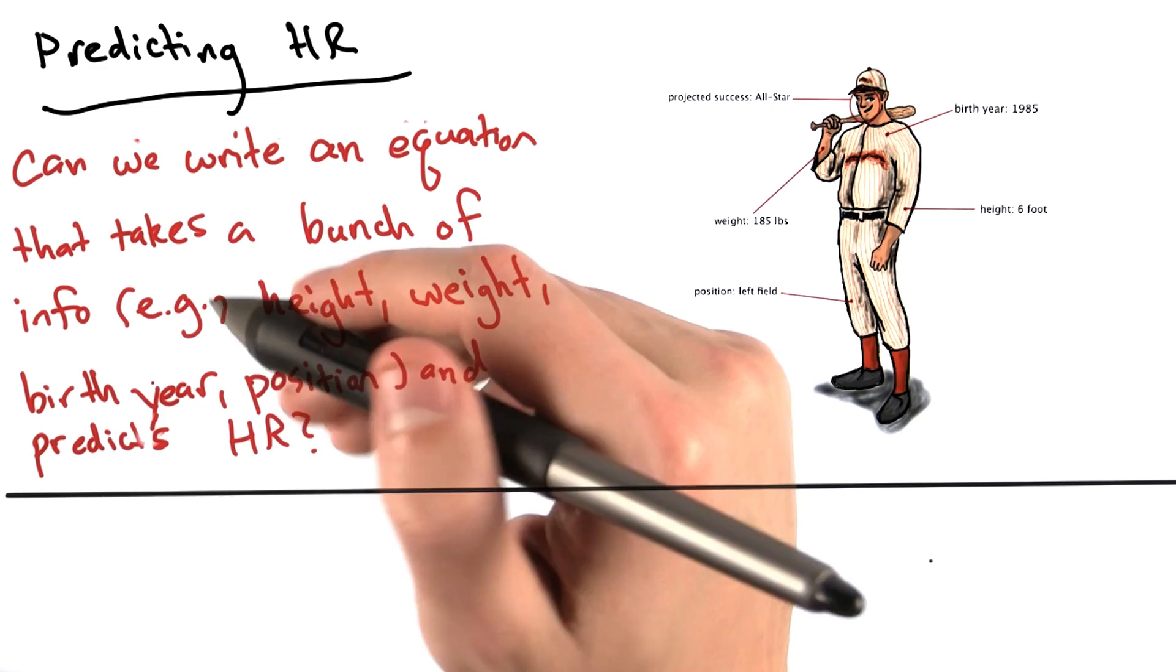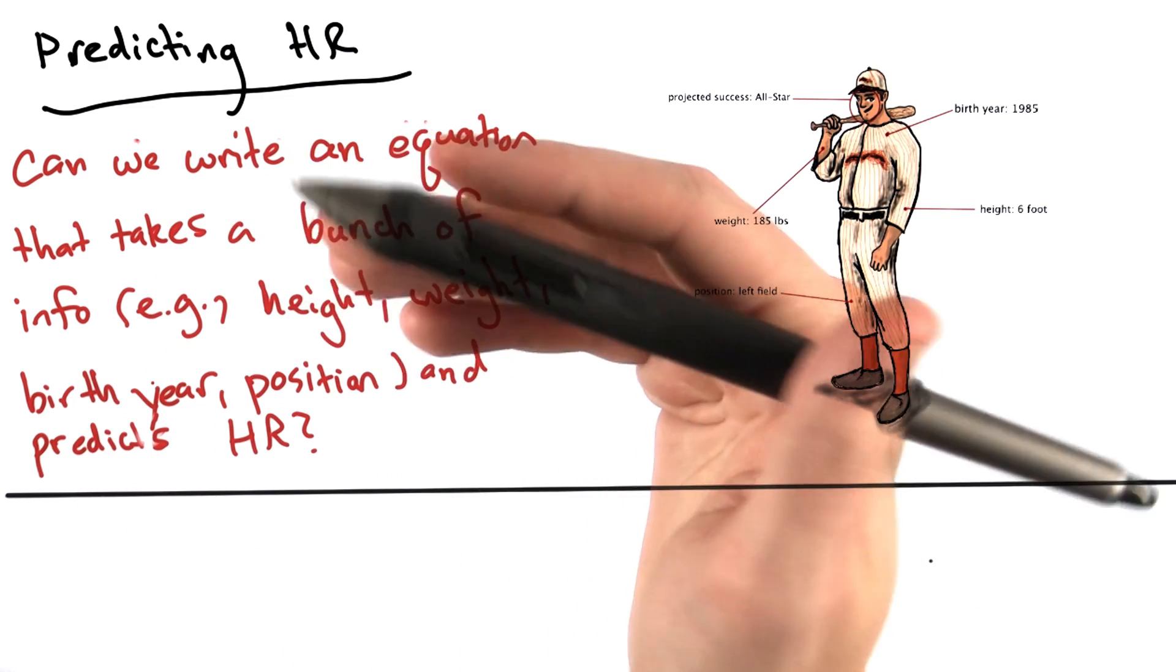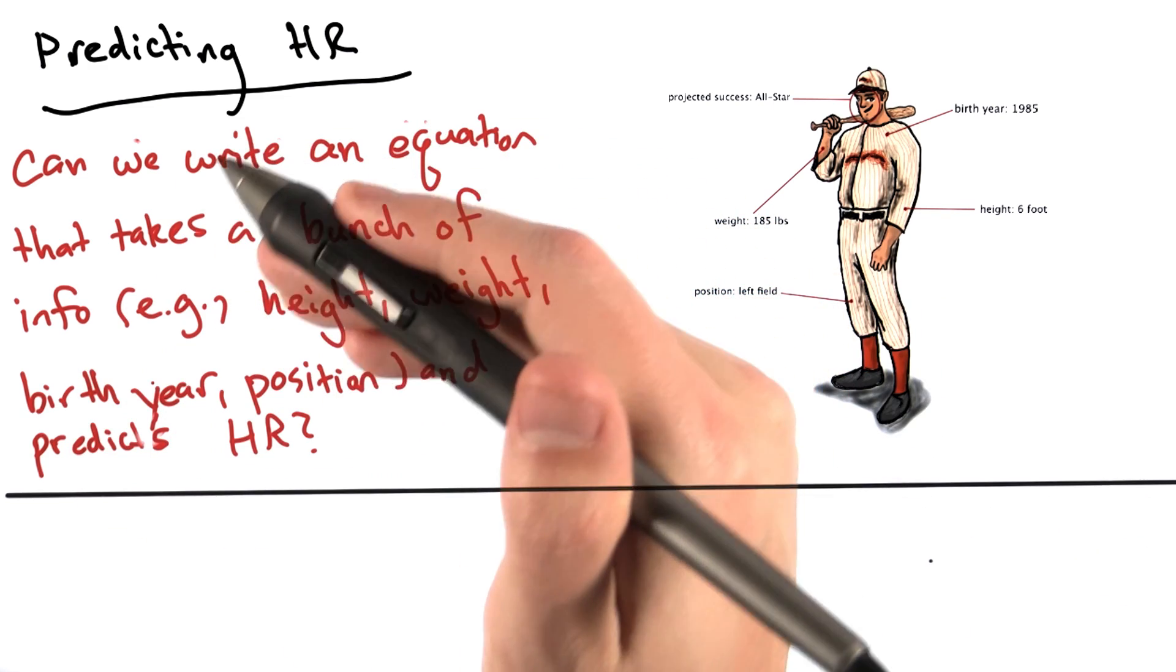for example, height, weight, birth year, or position, about baseball players, and predicts their lifetime number of home runs?